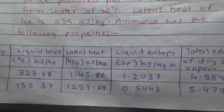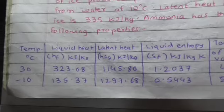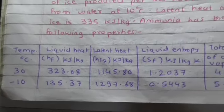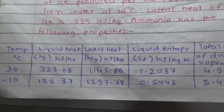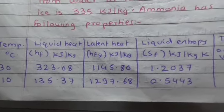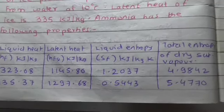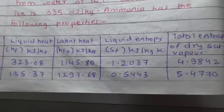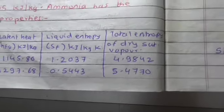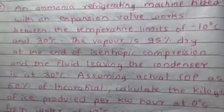Ammonia has the following properties. The chart is given to us: temperature of 30 and minus 10 degrees Celsius, then liquid heat HF, latent heat HFG in kilojoule per kilogram, liquid entropy SF, and total entropy of dry saturated vapor. In this problem there is a big hint - the notations are directly given.